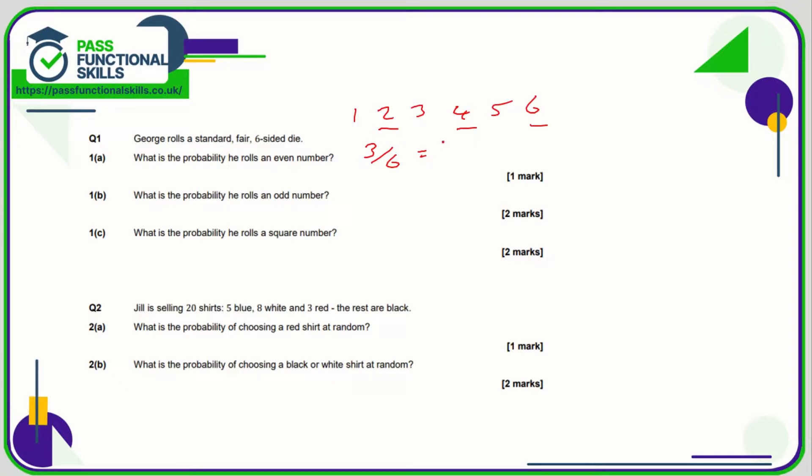So that is three out of six, otherwise known as one half. Odd is also three out of six, so that is also one half. And what's the probability he rolls a square number? Well, one is a square number and four is a square number, one times one, two times two. So that's two out of six, otherwise known as one third.